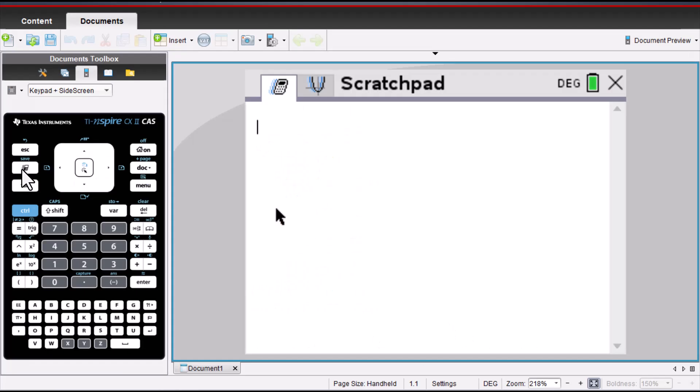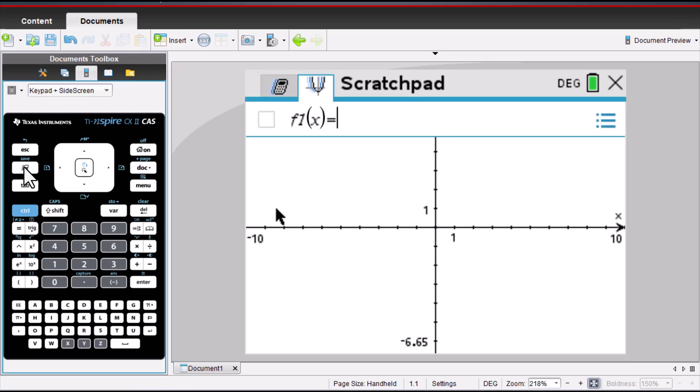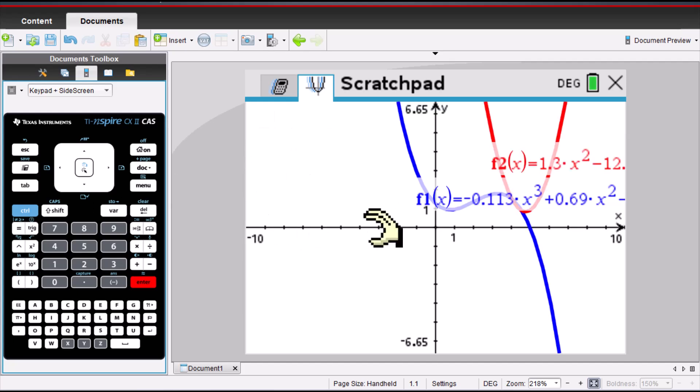Let's go to scratchpad to graph. Put those two functions into f1 of x and f2 of x. Click on tab. Put g of x into this f2 of x. After we put f of x into f1 of x and g of x into f2 of x.